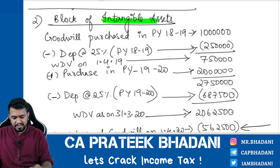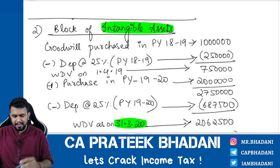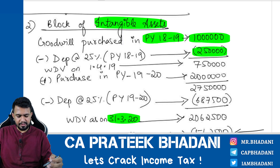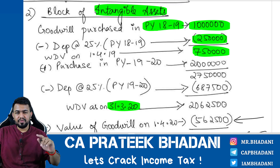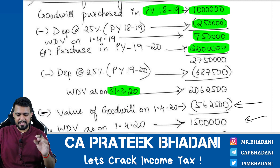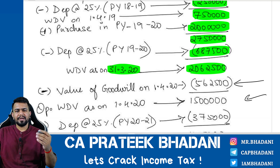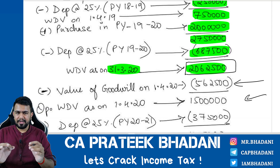Next, calculate the value of the intangible asset block as on 1.4.2020. Take the depreciation in previous year 2018-19, which is ₹2,50,000, and arrive at the closing WDV as on 1.4.2019. Then add the trademark purchased in previous year 2019-20 — trademark is also an intangible asset in the same block. The total becomes ₹27,50,000. Reduce depreciation at 25%, and you get the WDV as on 31.3.2020 (i.e., 1.4.2020).